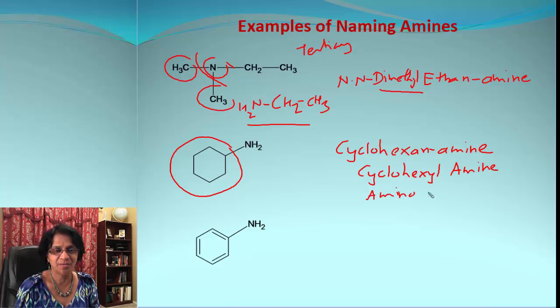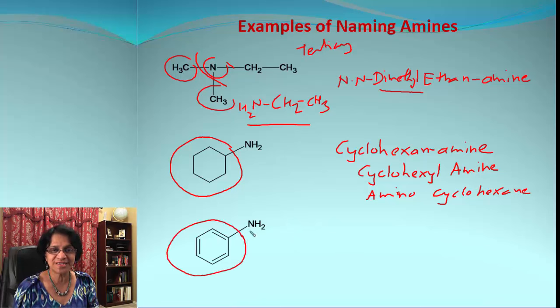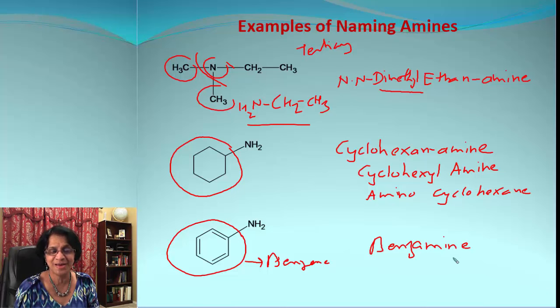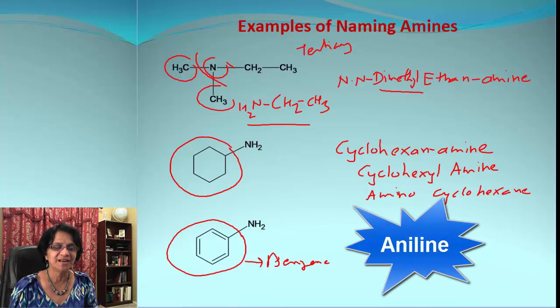How about the next compound? This ring which you see here is a benzene ring and to the benzene ring we got an amino group there, so we are going to use that parent name as benzene and then you're simply going to add the word amine: benzenamine. And just for your information, the other common name for this compound is aniline.